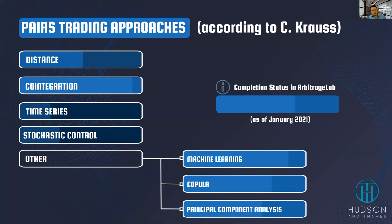The cointegration approach is based on harder econometric and statistical theory. It requires a pair to be cointegrated — a harder requirement compared to basic close distance. Yifeng will cover cointegration ideas in his presentation today. The time series approach doesn't focus on choosing pairs; the main idea is modeling or predicting the spread and trading based on that prediction. Stochastic control is similar but uses stochastic models like Markov chains instead of time series models like ARIMA. The 'other' category includes methods not well-covered in literature or not strongly linked to the previous four.